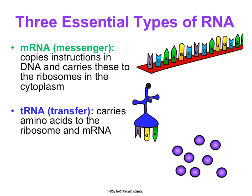tRNA is transfer RNA. It carries or transfers amino acids to the ribosome and the mRNA that's in the ribosome. So mRNA has the instructions and goes to the ribosome; based on what it says, tRNA brings the amino acids that will be used to assemble the protein, because amino acids are the monomer of proteins.